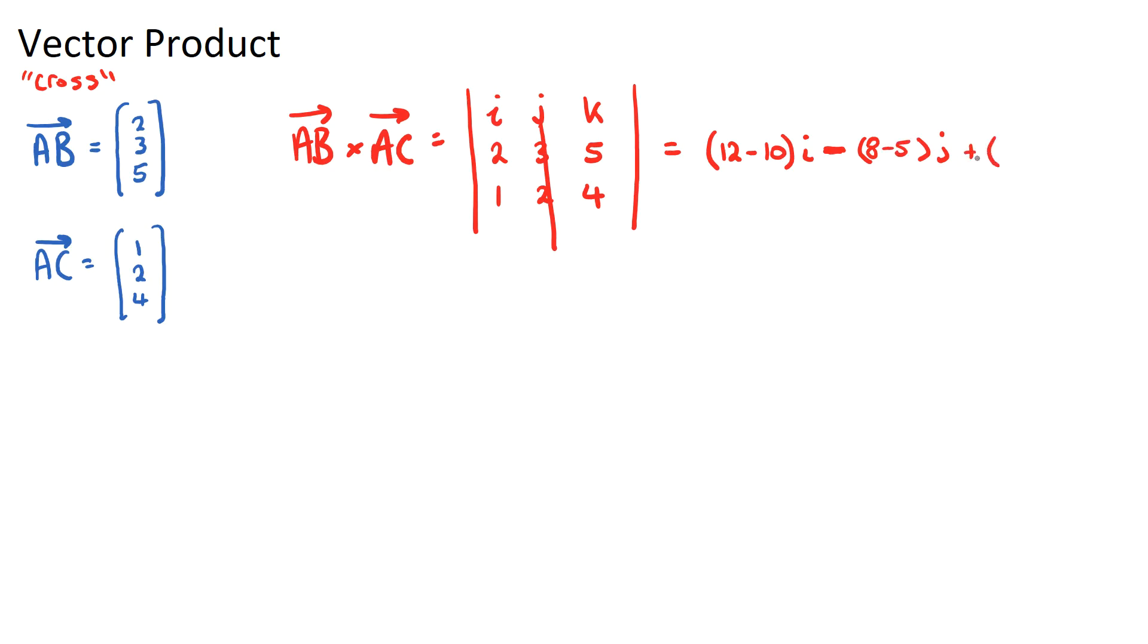And then plus, and for the k, we will go 2 times 2, which is 4, minus 3 times 1, which is 3, and this will be k. So now let's find our final answer. 12 minus 10 is 2i, and then we're going to have minus 3j and plus 1k. And we could write our vector as 2, -3, 1.